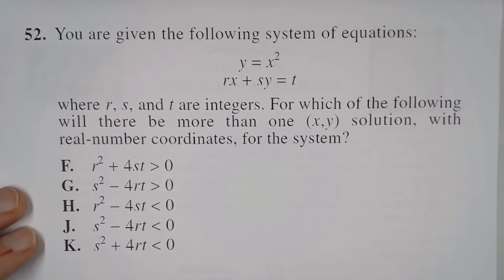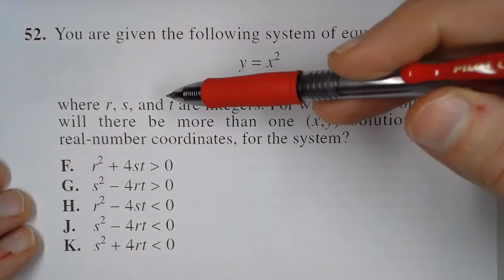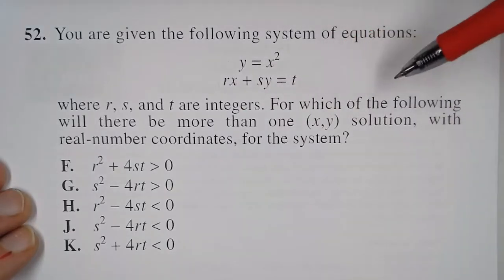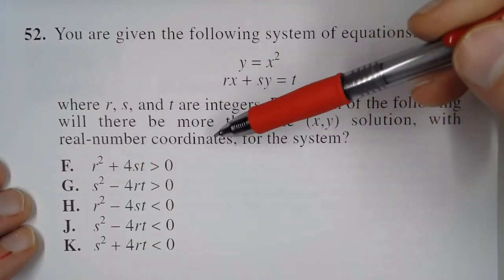For problem 52, it says you're given the following system of equations: y equals x squared and rx plus sy equals t, where r, s, and t are integers. For which of the following will there be more than one x, y solution with real number coordinates for the system?